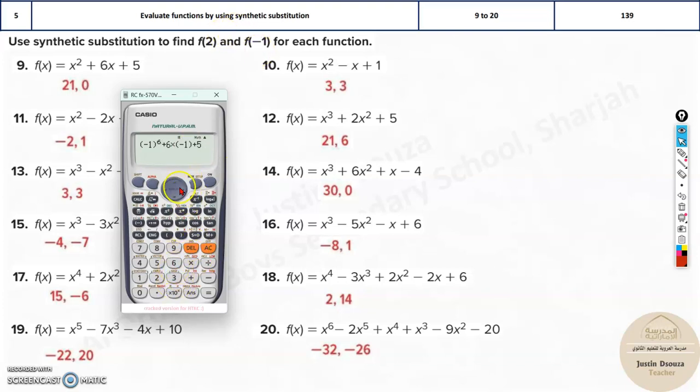To the power 6. Then we have minus 2. So it's minus 2 into minus 1, the whole power 5. Then we have x to the power 4, that is minus 1 to the power 4.